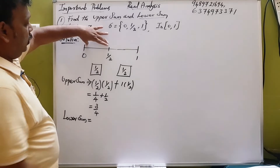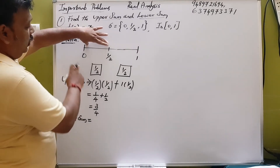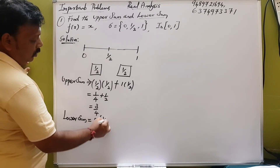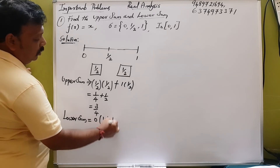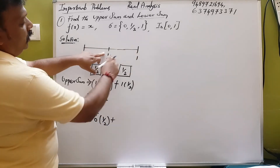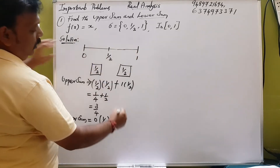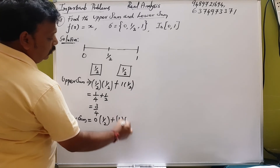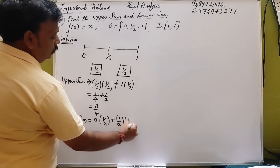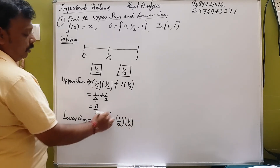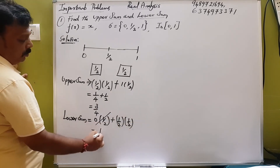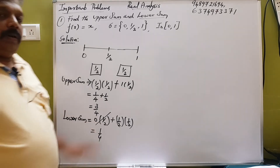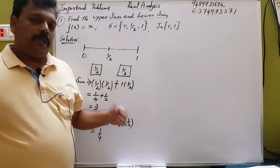If you look at this, the lower value is 0, then 0 into 1 by 2. If you have a lower value, it is 1 by 2. So, 1 by 2 into 1 by 2. So, 0 into anything is 0, giving 1 by 4. If you have a formula, you can write it directly.